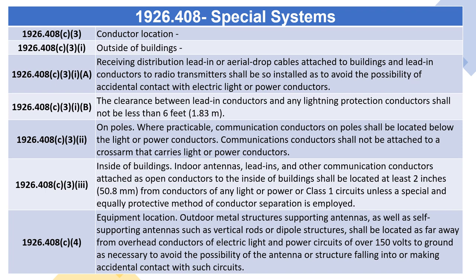1926.408(C)(3) — Conductor Location. 1926.408(C)(3)(i) — Outside of Buildings. (A) Receiving distribution lead-in or aerial drop cables attached to buildings and lead-in conductors to radio transmitters shall be so installed as to avoid the possibility of accidental contact with electric light or power conductors. (B) The clearance between lead-in conductors and any lightning protection conductors shall not be less than 6 feet (1.83 meters). 1926.408(C)(3)(ii) — On Poles. Where practicable, communication conductors on poles shall be located below the light or power conductors. Communications conductors shall not be attached to a crossarm that carries light or power conductors.